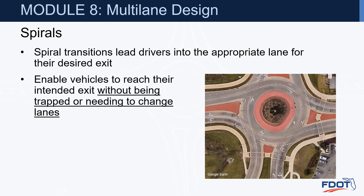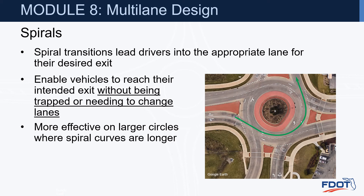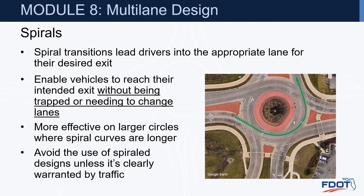Spirals. A spiral transition leads drivers into the appropriate lane for their desired exit, enabling vehicles to reach their intended exit without being trapped or needing to change lanes. Spirals tend to work better on larger circles where spiral curves are longer. Avoid the use of spiral designs unless clearly warranted by traffic, as spirals add complexity and sometimes driver confusion.